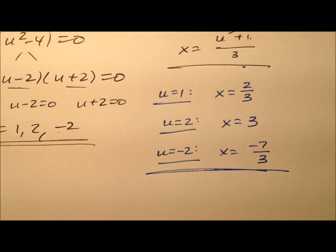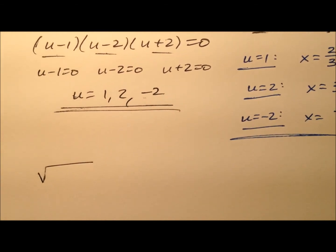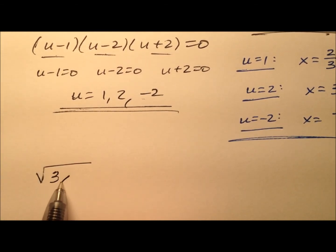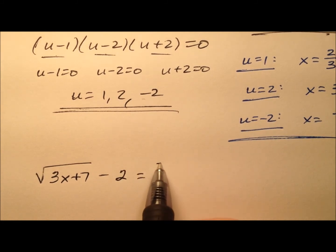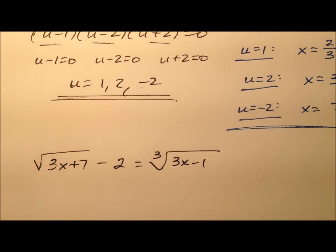Okay, so three possible values. So we need to plug each one of these into our original equation to see if we have any extraneous solutions, what works and what doesn't. So we'll go ahead and rewrite our original equation. So the square root of 3x plus 7, from that we'll subtract 2, and that's going to equal this cube root of 3x minus 1.